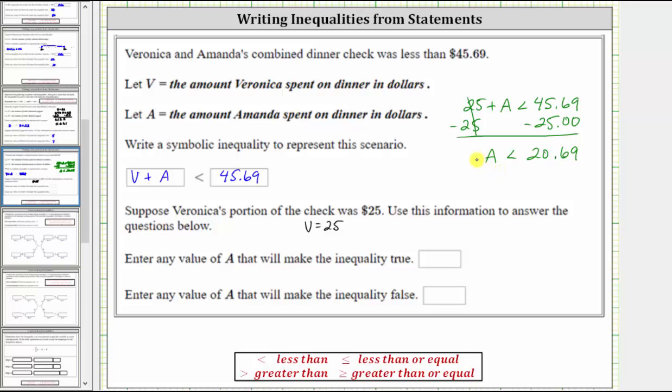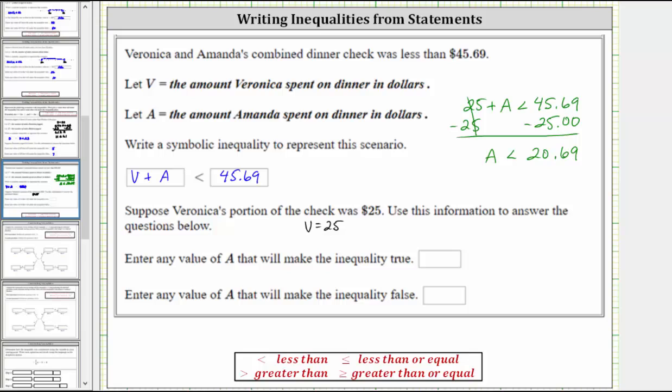Now we know A, the amount Amanda spent on dinner in dollars, is less than $20.69. Going back to the question, enter any value of A that will make the inequality true.